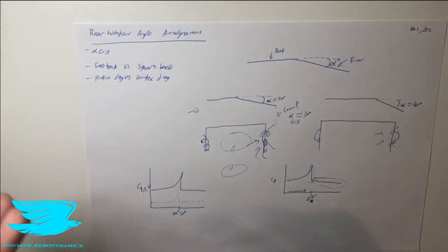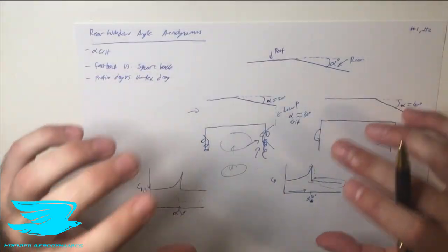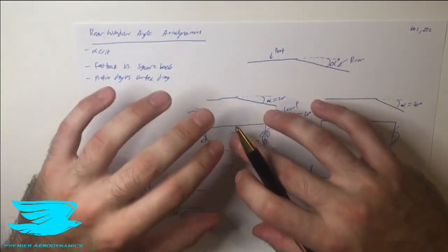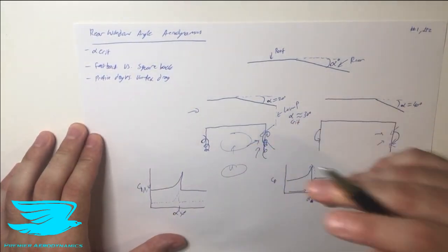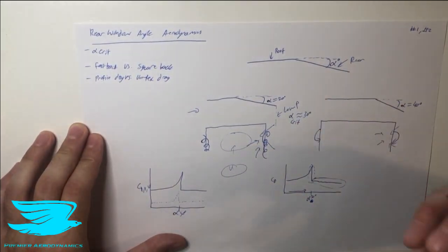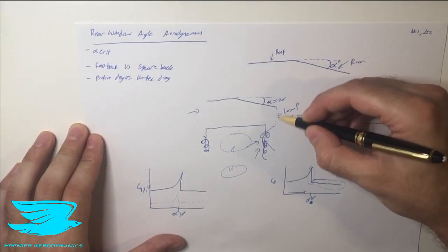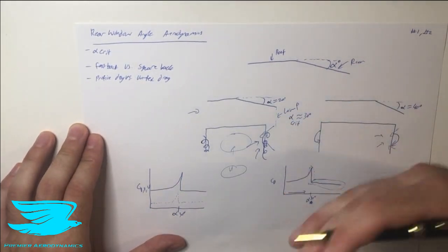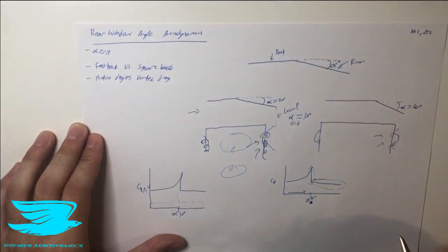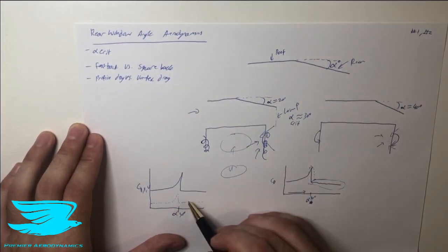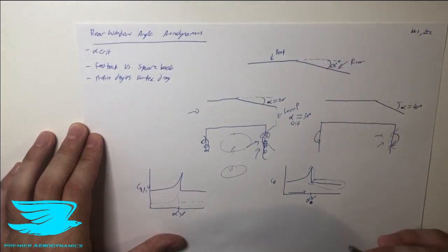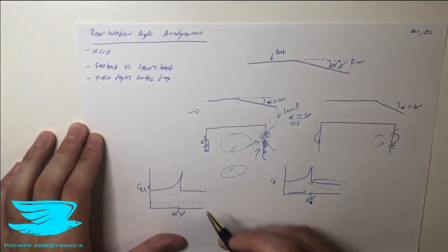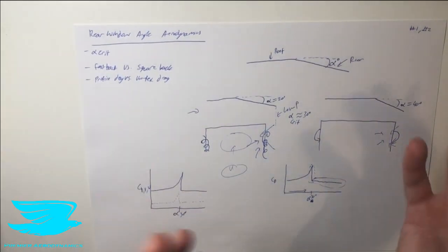The reason profile drag is higher is because the vortices aren't just inducing flow — they're also creating low pressure regions at the back of the car. Dropping the pressure on the back face increases the profile drag through the pressure drag component. So even though the vortices are increasing vortex drag directly, they are also increasing profile drag indirectly, and profile drag turns out to be far greater.